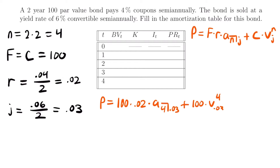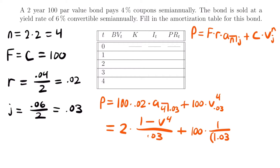Writing out the notation explicitly, the price equals 2 times (1 minus the present value factor to the power of 4, divided by 0.03), plus 100 times (1 divided by 1.03 to the power of 4). Note that the present value factor to the power of 4 is the same in both expressions. Plugging this into the calculator, the price equals $96.28, which is also the book value at time equals zero.